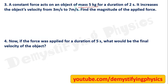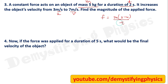A mass of 5 kg changes velocity from 3 m/s to 7 m/s in 2 seconds. To find the magnitude of force, use F = m(v - u)/t. Putting all values in gives force equal to 10 Newton.